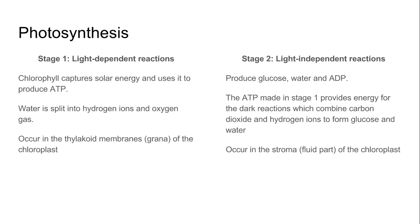There are two stages to the photosynthesis reaction. The first is light-dependent, where chlorophyll captures solar energy and uses it to produce ATP by combining ADP with a phosphate molecule. Water is split into hydrogen ions and oxygen gas, and this occurs in the thylakoid membranes, otherwise known as the grana of the chloroplasts.